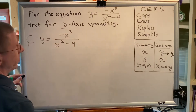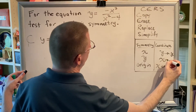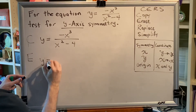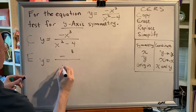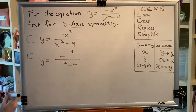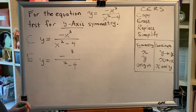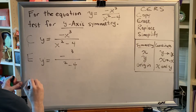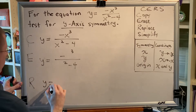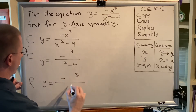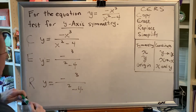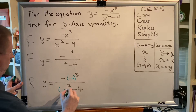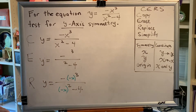We are testing for y-axis symmetry, which means x needs to be replaced with negative x. When we do our erase step, it's x that we're erasing — only the x, not anything to the left, after, or above it. Just the x. Next is the replace step — everywhere you used to have an x, now you put negative x in parentheses. Then comes the simplifying step.